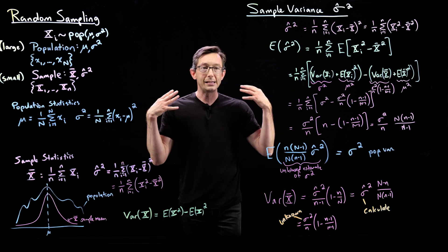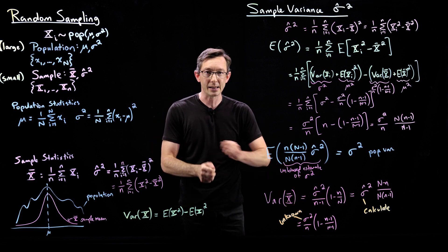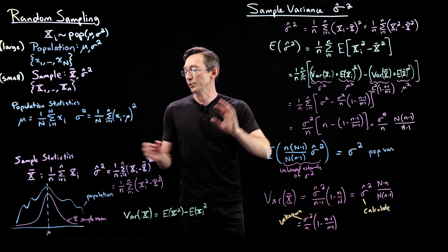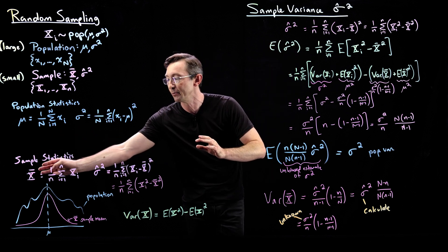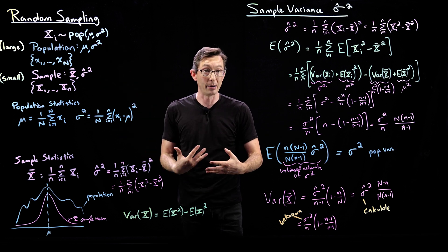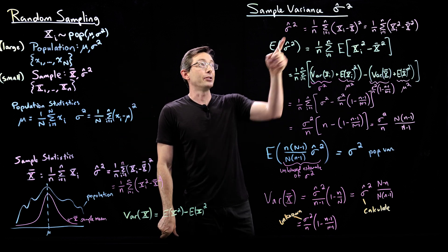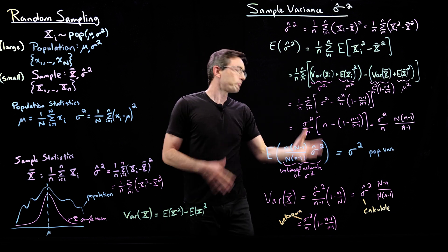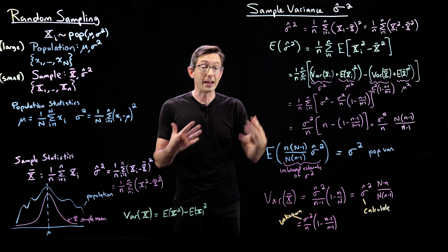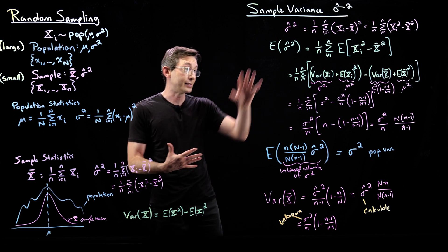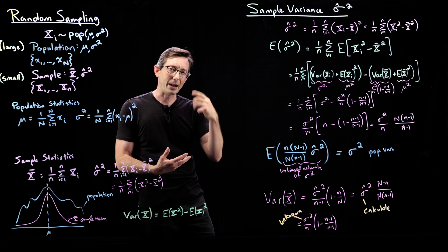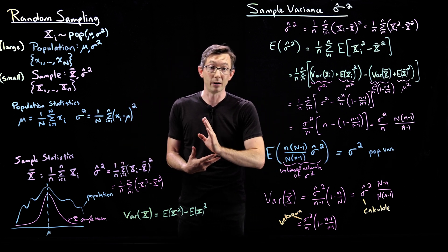You can convince yourself these are true by plugging in and writing it out on paper. So now we've analyzed the sample mean and the sample variance and related them to important properties of the population. The only thing we haven't looked at is the variance of the sample variance — that could be a cool homework exercise: write out Var(sigma hat squared) and think about how it relates to quantities you care about.